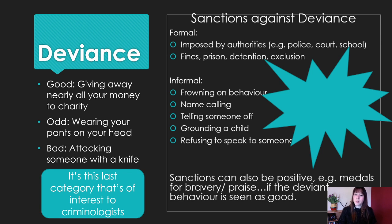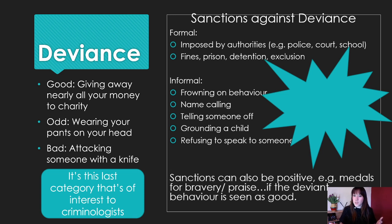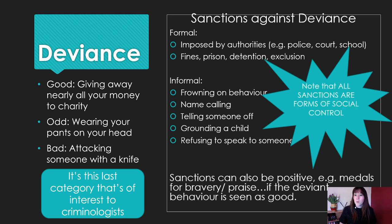Sanctions can also be positive — medals for bravery or praise, if the deviant behaviour is seen as good. For example, there's been a lot of deviant behaviour during lockdown. Sir Tom, doing his walk and raising all of that money for the NHS — that's deviant. It's very out of the norm that somebody can raise that much money at that age. He just walked and raised money, and because of his deviance he won a medal — he was knighted. But you need to note that all sanctions — good, bad, formal, informal — are all forms of social control: the way that you are controlled by society.